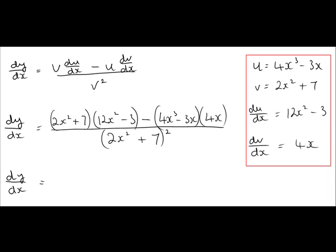So next we multiply out what we have here, so we have 2x squared plus 7 by 12x squared minus 3. So 2x squared by 12x squared gives us 24x to the power of 4, 2x squared by minus 3 gives us minus 6x squared, 7 by 12x squared gives us 84x squared, and 7 by minus 3 gives us minus 21.